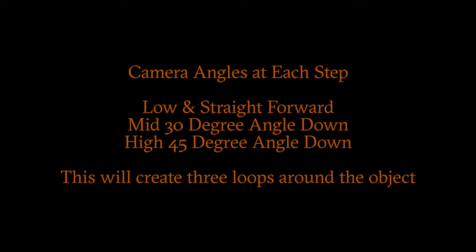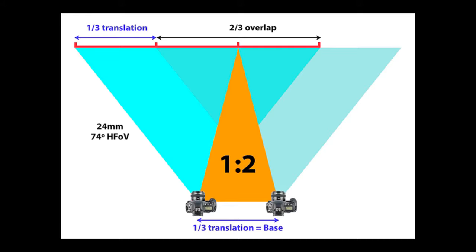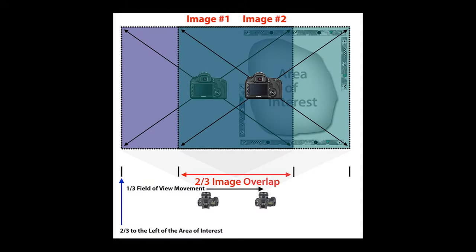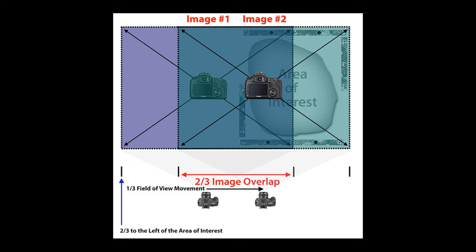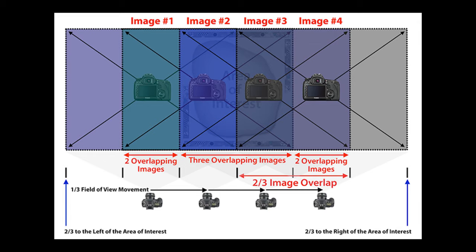The camera angles at each step: first is the low angle, which is straightforward. Next step is the midpoint at a 30-degree angle down. Then the high point at a 45-degree angle down. This will create three loops around the object. I'm using the same one-third two-thirds overlap as I progress down the face of the object. This is an example after two images using two-thirds overlap, and as I progress I'm sticking with that two-thirds overlap, providing enough overlap as I run through.